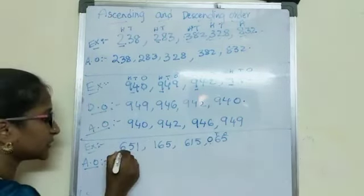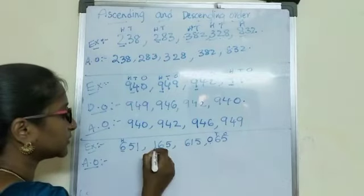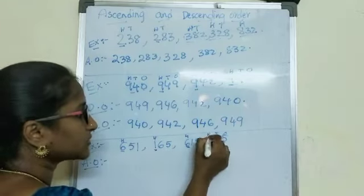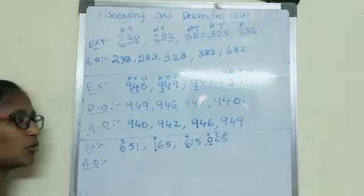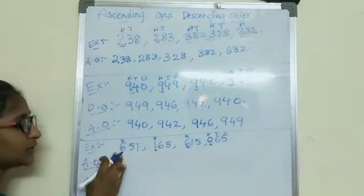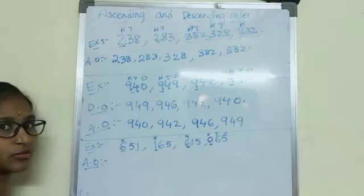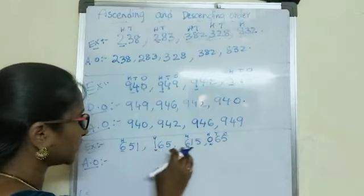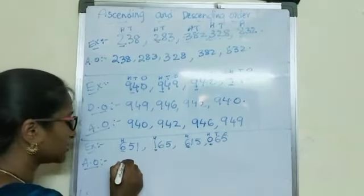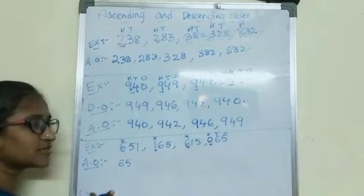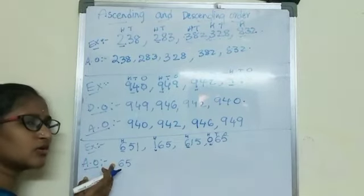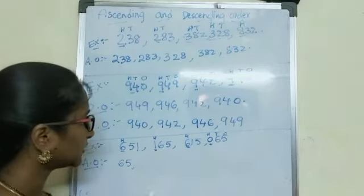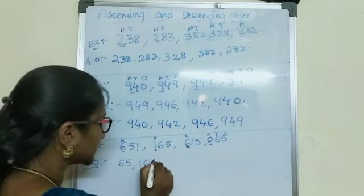So let us compare these numbers with the hundreds place. In this number I have 6, in this number I have 1, in this number also I have 6, in this number I have 0. Ascending order — I have to pick the smallest hundreds place value: 6, 1, 6, 0. Yes, 0 is the smallest place value — so 65 is the smallest number. If I write 0 at the front it doesn't have any value, so leave it. Then after 65, the next hundreds digit is 1 — so I write 165.